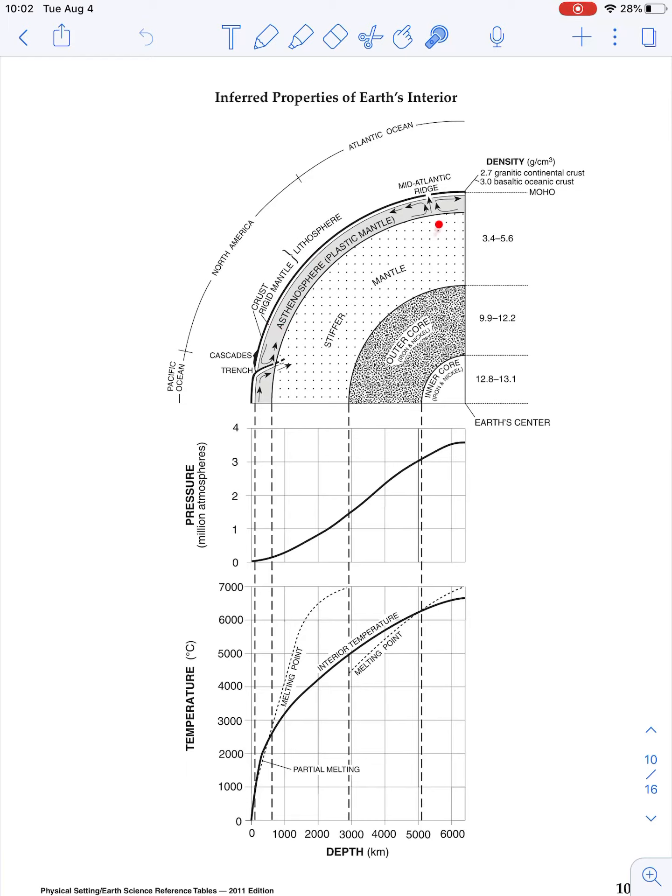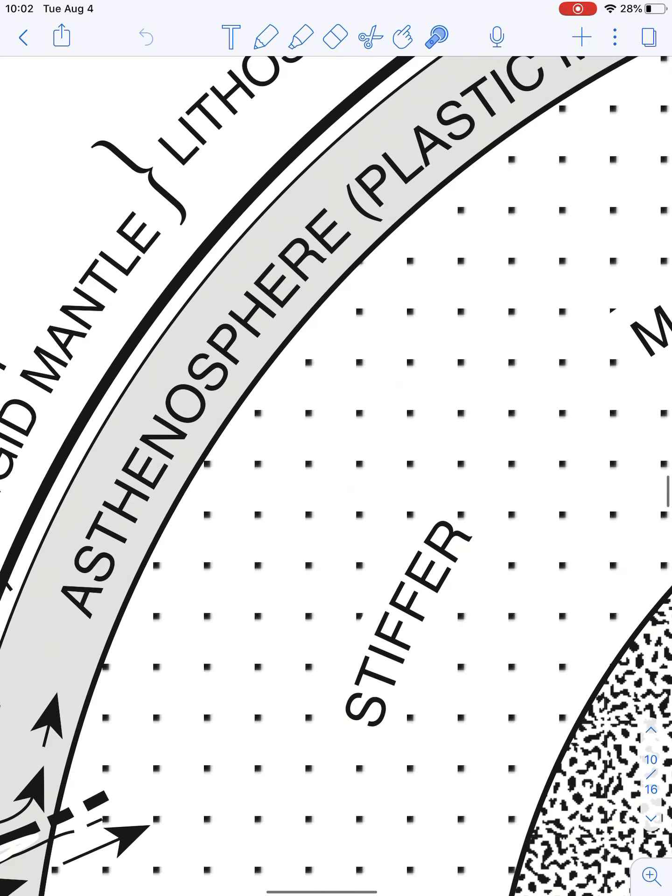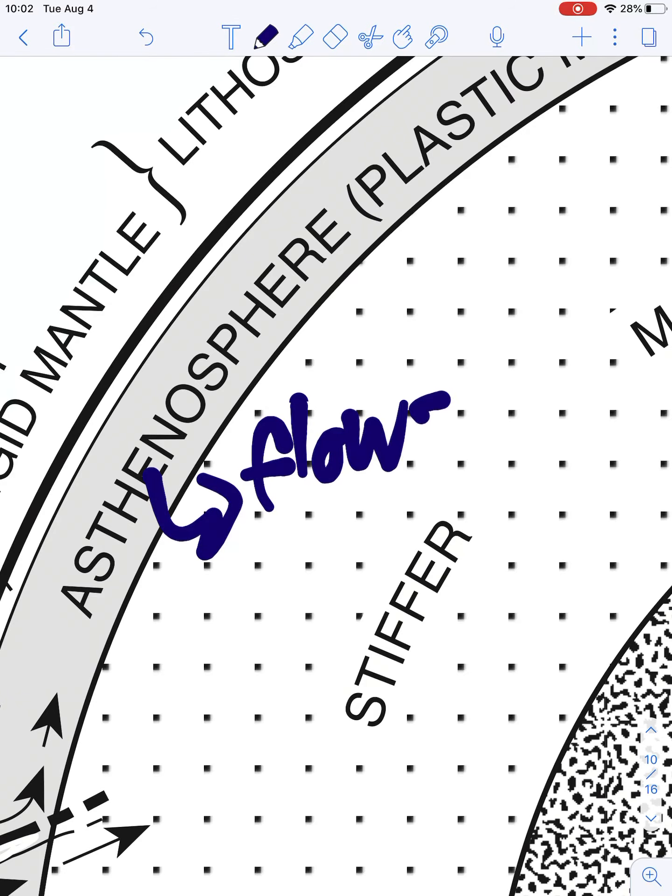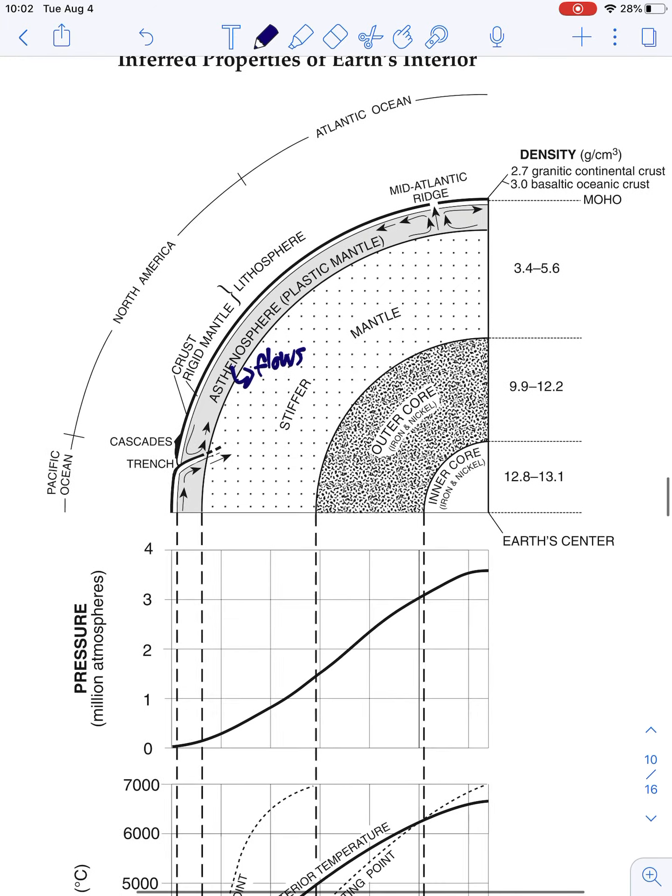That word plastic means that it flows. It's a very hard thing to describe without having a really deep understanding of geology, but basically it's not a liquid, it's not a solid, it's just something that flows. So next to asthenosphere, I'm going to just kind of draw a little arrow and I'm going to just write flows just to point that out to you because that is an important thing to keep in mind.